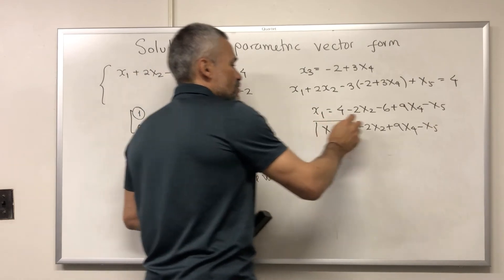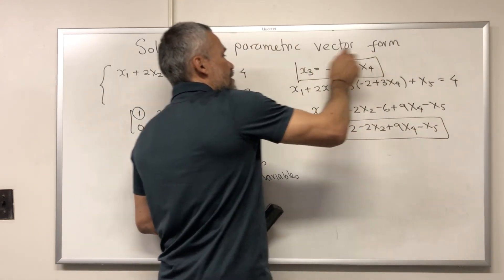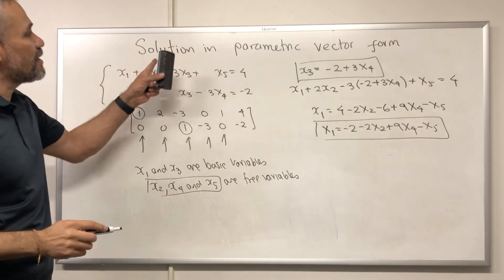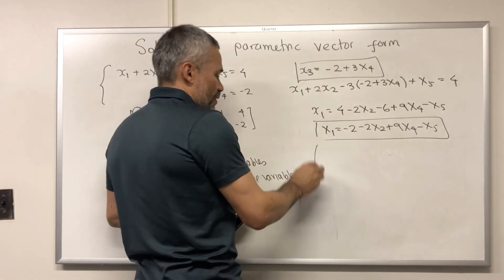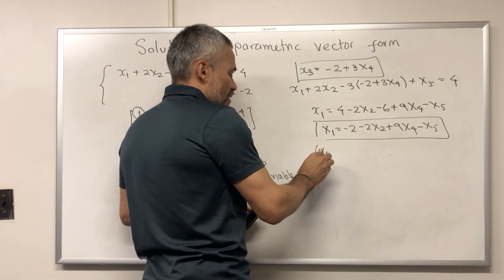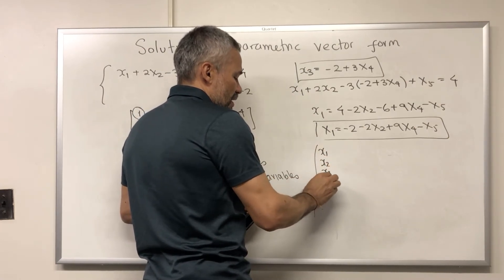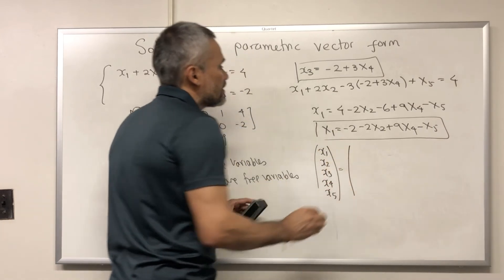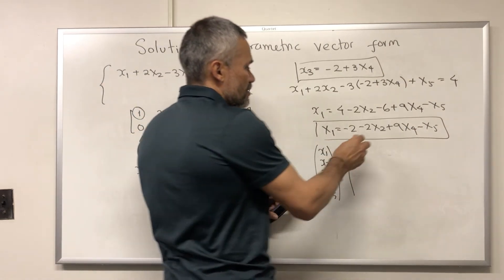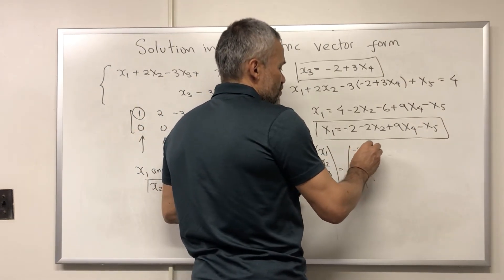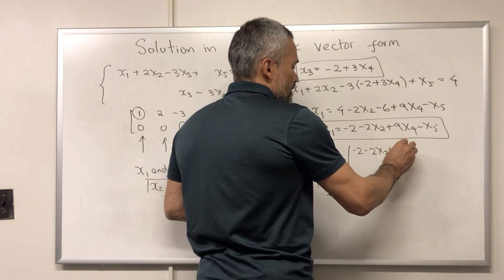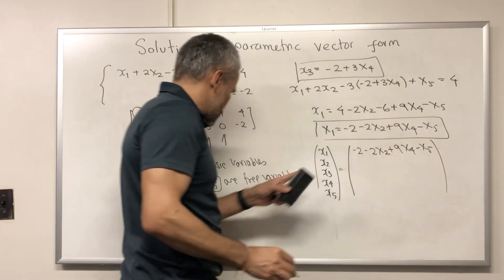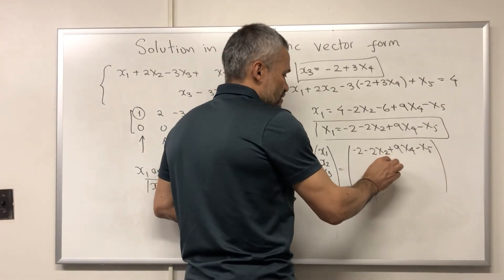This is the solution of the system. But in order to write the solution in parametric vector form, we do the following. We write x1, x2, x3, x4, and x5. And instead of x1, we write the expression in terms of the free variables, which is negative 2 minus 2x2 plus 9x4 minus x5. And x2 is free, then we just write x2.